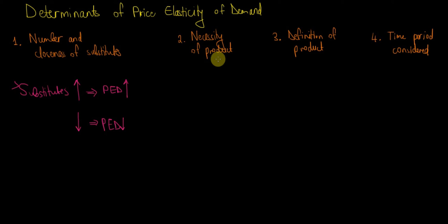The second determinant is the necessity of the product. How much you need a product determines how reactive you are to its price changes. If you need the product daily, you are more likely to pay higher prices. For instance, we all need water, so even if water rises in price we still buy it. Similarly, if a medical treatment helps us survive, we won't give it up even if it becomes more expensive.